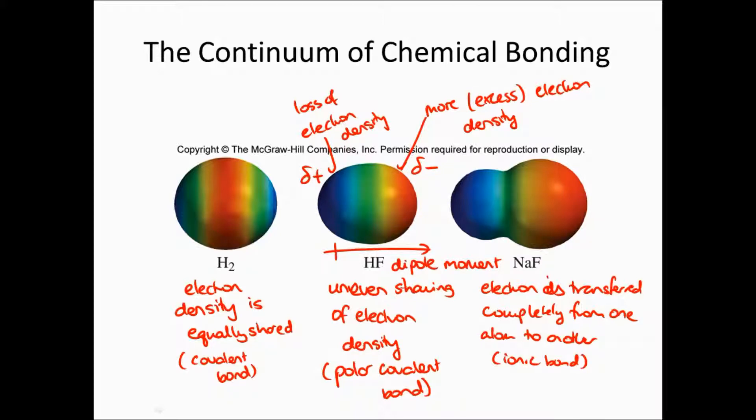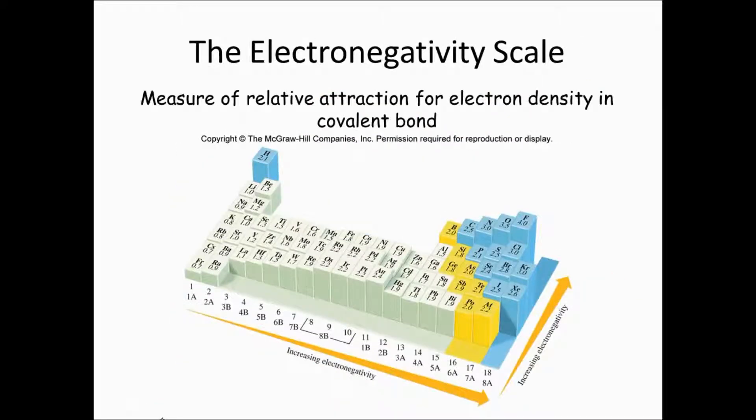How do we figure out if it's polar or non-polar? And what's the difference between a polar covalent bond where there is sharing but uneven sharing, versus an ionic bond where there's complete transfer of the electron density? The way to figure this out typically is to use the electronegativity scale.